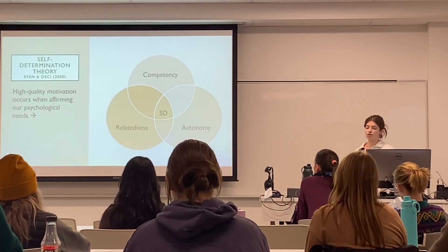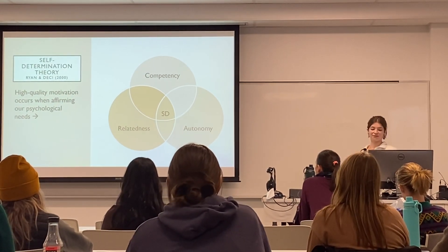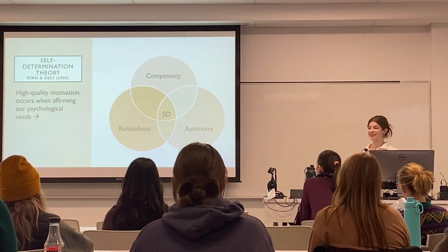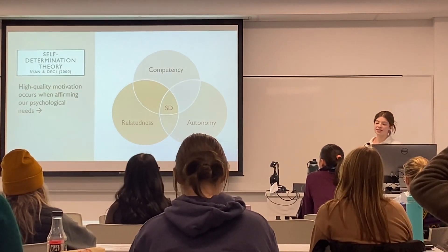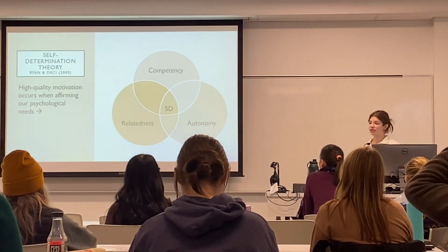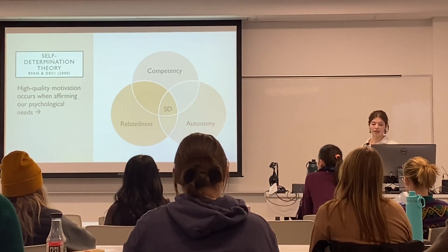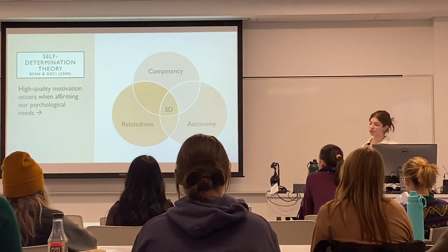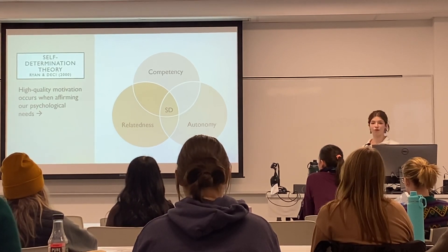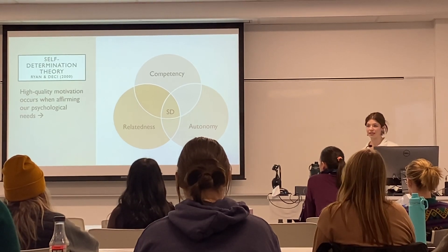Autonomy is a feeling of control and approval over one's choices and behavior, while competency is a feeling of mastery and effectiveness while engaging in an activity, and relatedness is a sense of connection and belonging to others. Thus, according to SDT, people with mental illnesses will identify as a person with a disability as long as this affirms their sense of autonomy, competency, and relatedness.